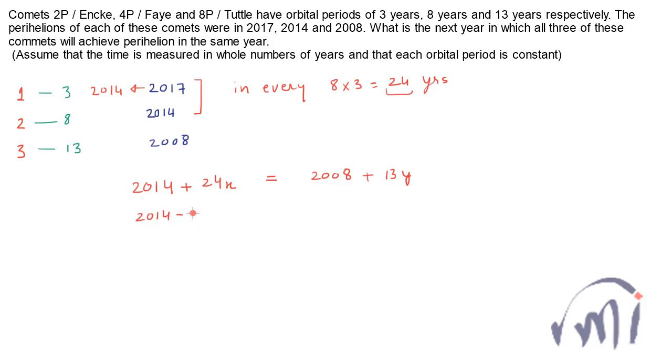So 2014 minus 2008 can be written as 13y minus 24x, or 6 equals 13y minus 24x. For this to have a positive value, the value of y will be more than value of x and the value of y should be approximately double the value of x.